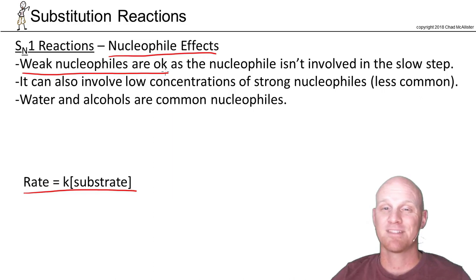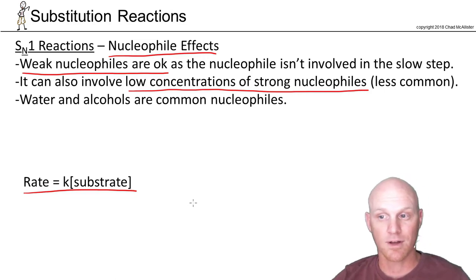But for an SN1 reaction, a weak nucleophile is just fine. It's not even involved in the slow step, and it's not in the rate law. Now technically, we could have a low concentration of a strong nucleophile, still do SN1. It's not very common, but I'll cover my bases here.